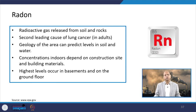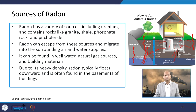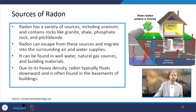Radon, a radioactive gas, can be released from soil and rocks and is the second leading cause of lung cancer in adults. The geological formations of a particular area can influence radon presence in specific localities. Due to its heavy density, radon typically floats downward and is often found in basements. If someone spends a lot of time in the basement where radon is present, it should be fully ventilated and flushed out, otherwise it may be very problematic.